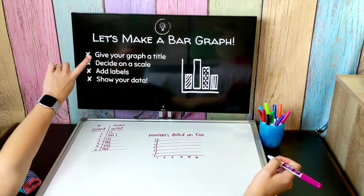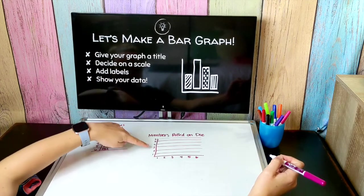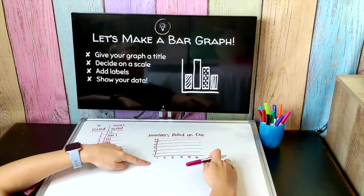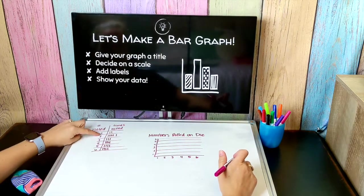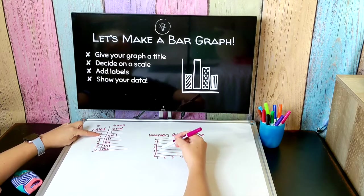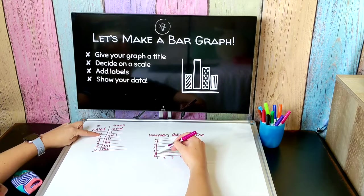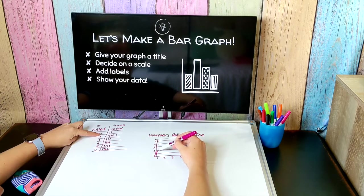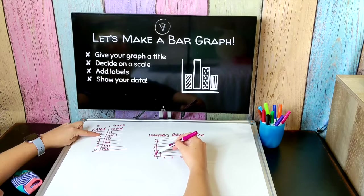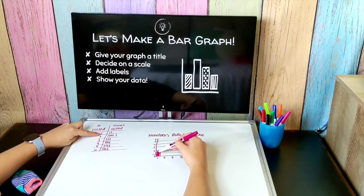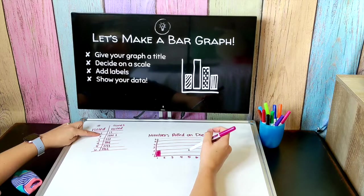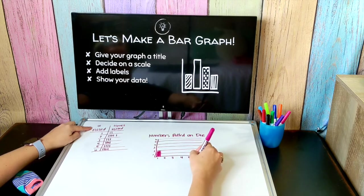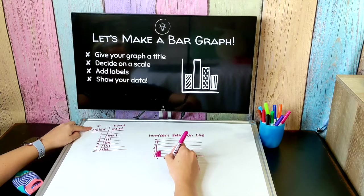So now I gave my graph a title, I have my scale in place, I've added my labels. Now it's time to show my data. So I rolled a one two times, so above my one I'm going to create my bar that goes up to two. You know it would be a good idea for me to add more labels just thought about that. These down here were the number rolled and over here these were the times that it was rolled.